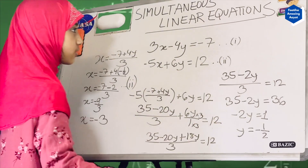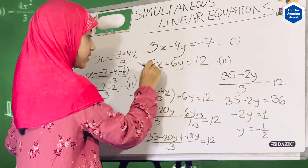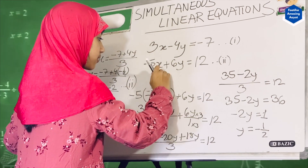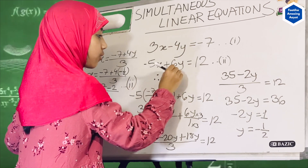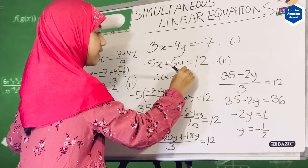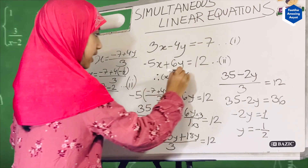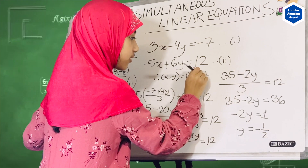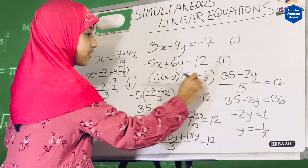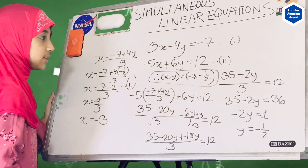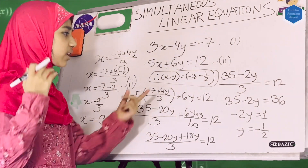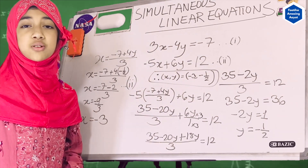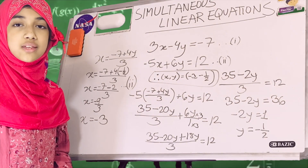We figured out our x value and our y value. Therefore — three dots — our x and y coordinates would be: x is minus 3, and y is minus half. This is what we actually needed. We just figured out the x and y values, the coordinates, with the substitution method. Now, I will show you the addition-subtraction method.